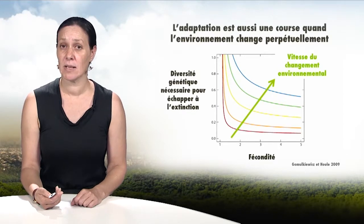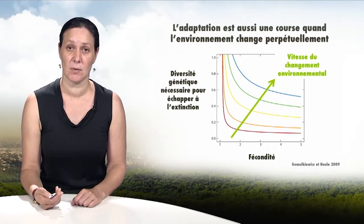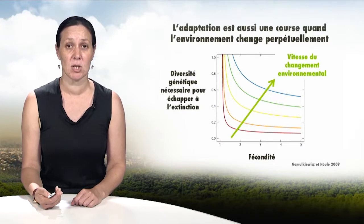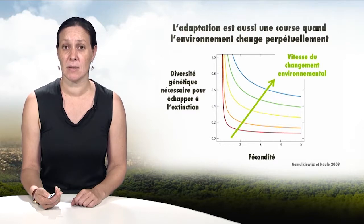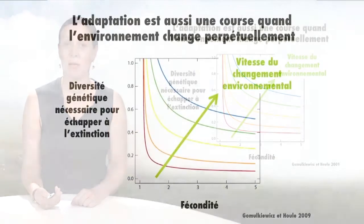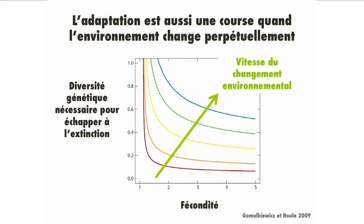The speed of evolution of a population depends on its genetic diversity. One can define a critical genetic diversity below which the population will become extinct because it is unable to adapt fast enough. On this graph, you can see the forecast of an adaptation model to a changing environment, showing the critical genetic diversity below which the population cannot escape extinction, depending on the fertility of the population and the speed of environmental change.